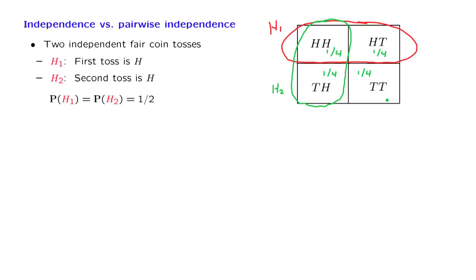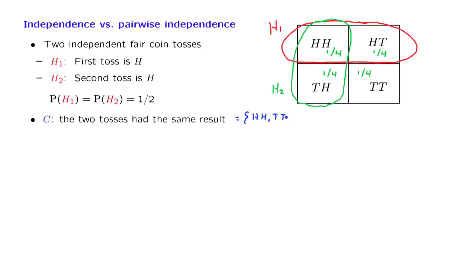Let us now introduce a new event: the event that the two tosses had the same result. This is the event that we obtain either heads-heads or tails-tails. Schematically, event C corresponds to this blue region in the diagram.